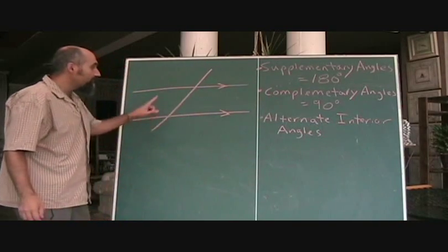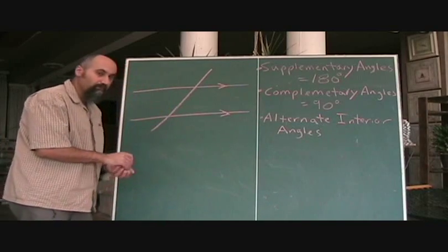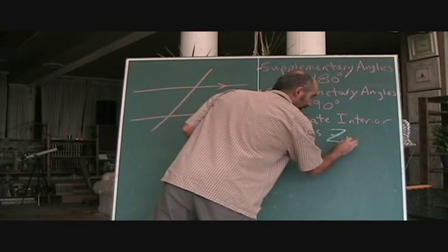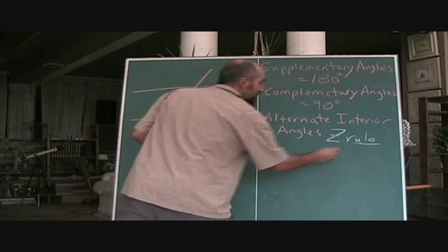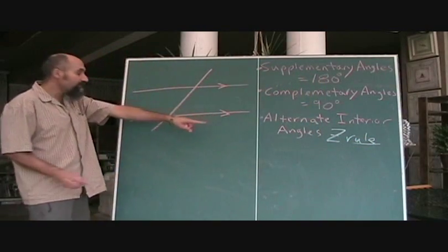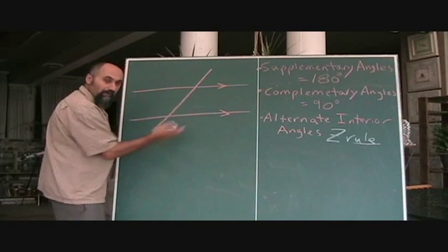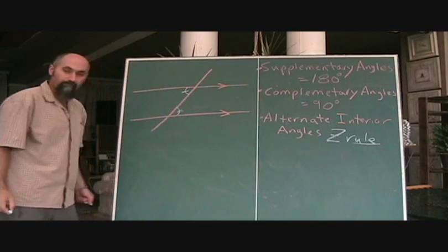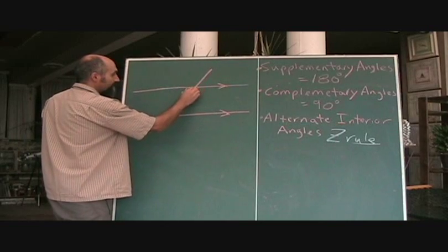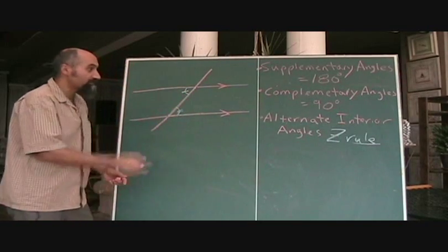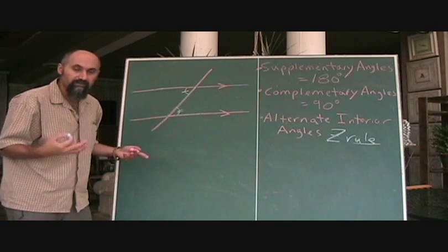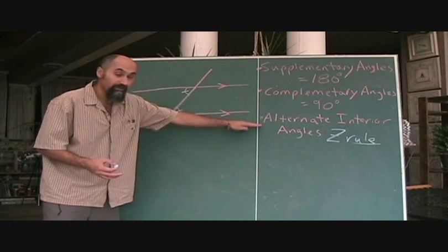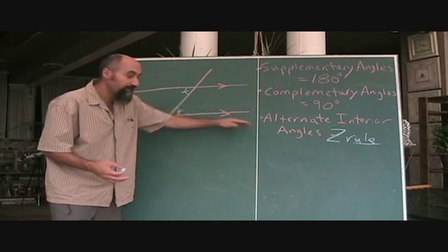The relationship specific to two parallel lines has three main types. The first is called alternate interior angles — you can think of this as the Z rule. The Z rule says: if you have two parallel lines with a line going through them, this angle is equal to this angle. This shape forms your Z, which is why it's sometimes called the Z rule. Alternate interior angle is the most common term for this relationship.